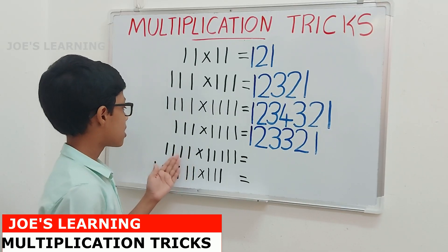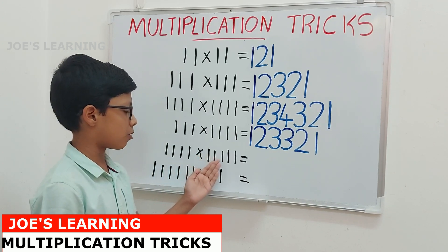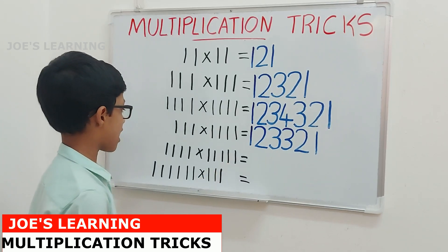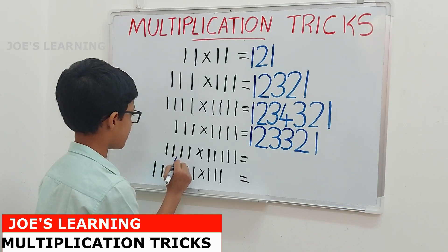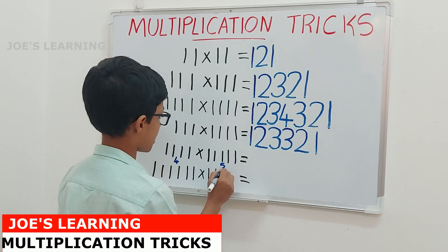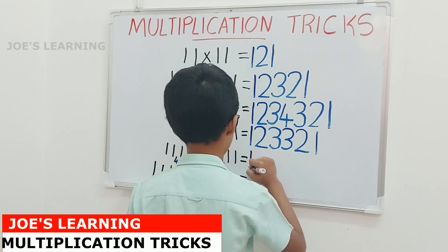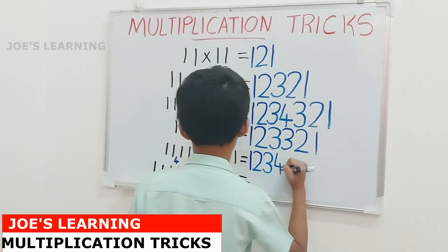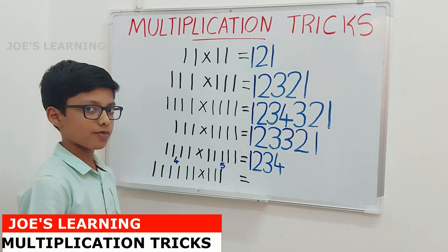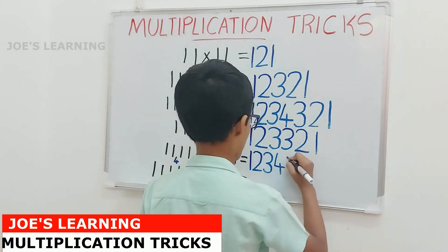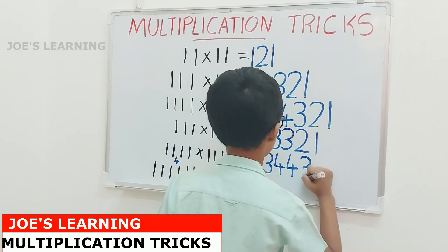Now let us look at 1111 multiplied by 11111. First we find the number of digits of both numbers — this number has 4 digits, while this number has 5. So the smallest number of digits is 4, and we keep increasing until we reach 4. Then we find the difference: 5 minus 4 equals 1, so we write the last digit one more time, and then go on decreasing until we reach 1.